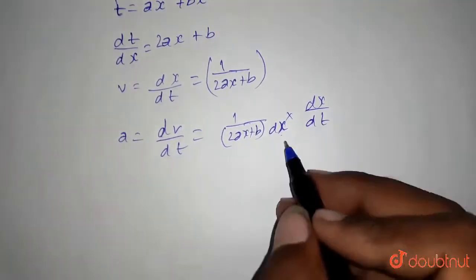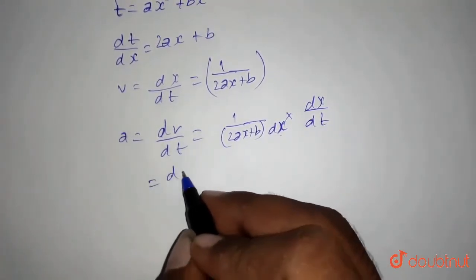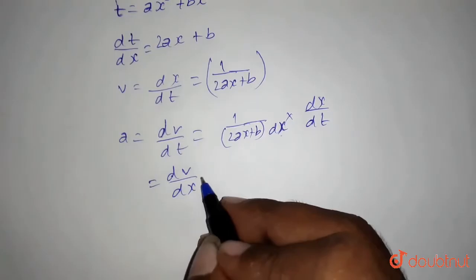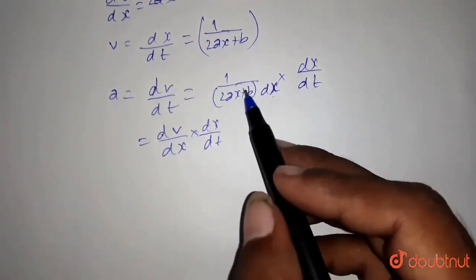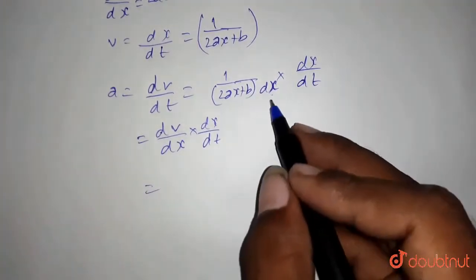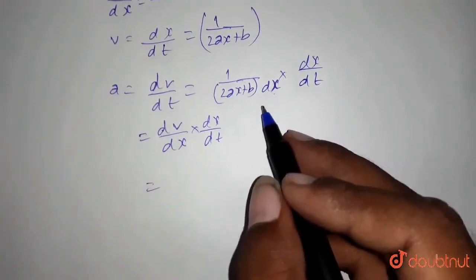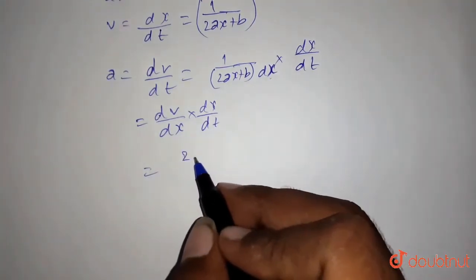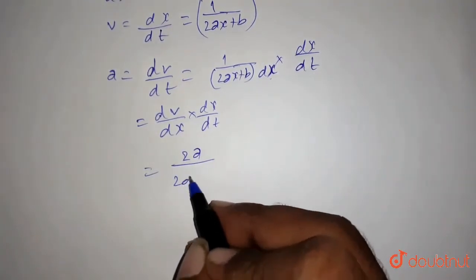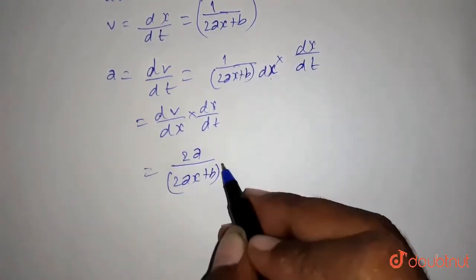So I have done nothing but I have written it as dv by dx into dx by dt in this form. So differentiation of this 2ax plus b with respect to dx, it will be equals to 2ax plus b whole square.